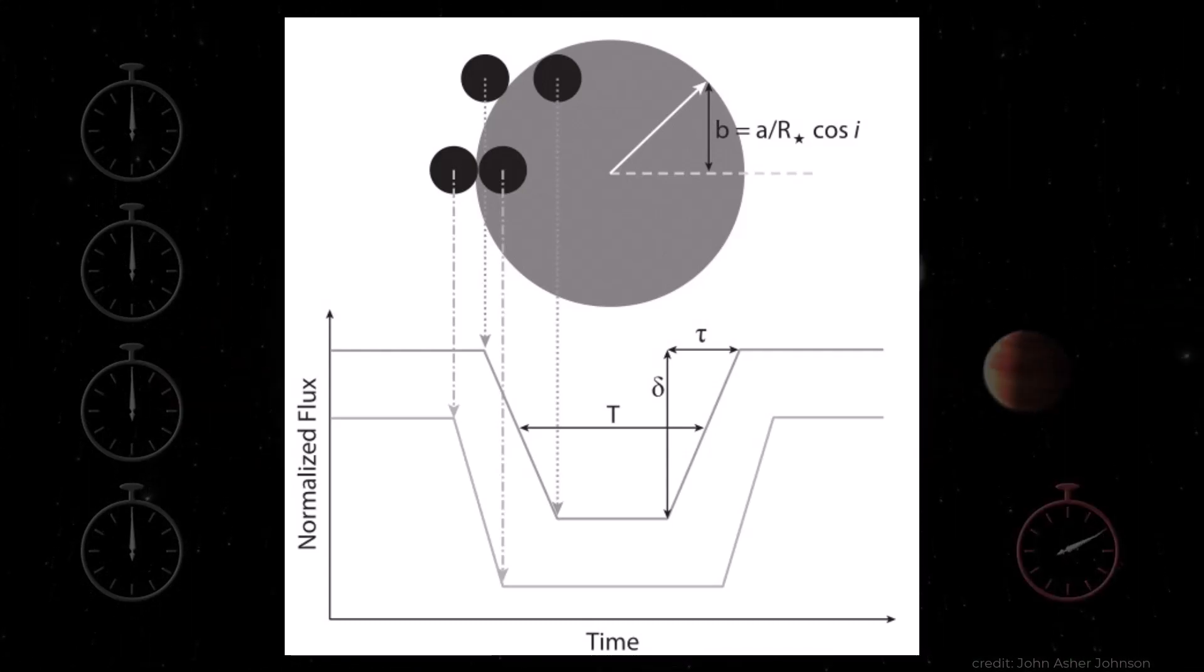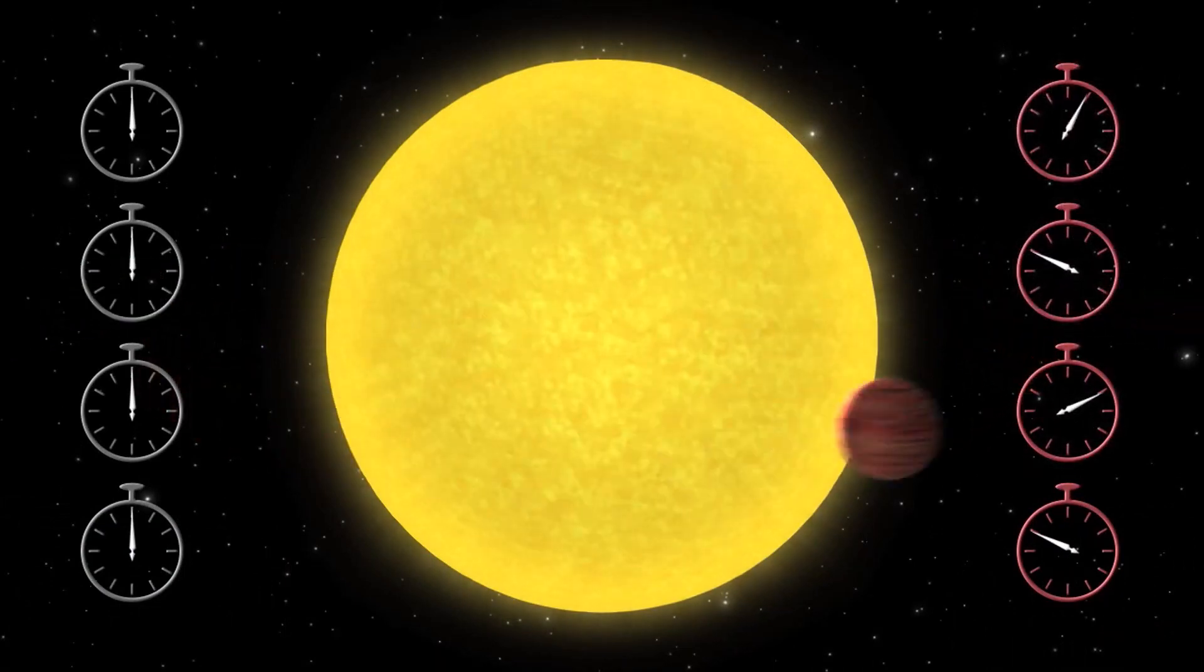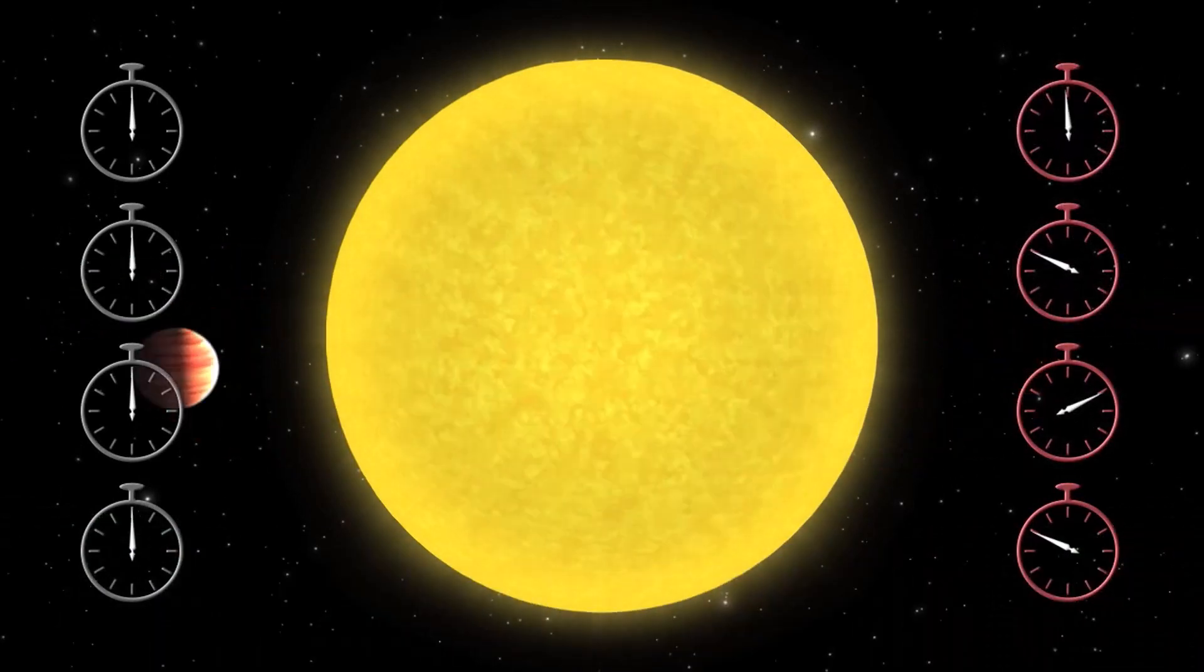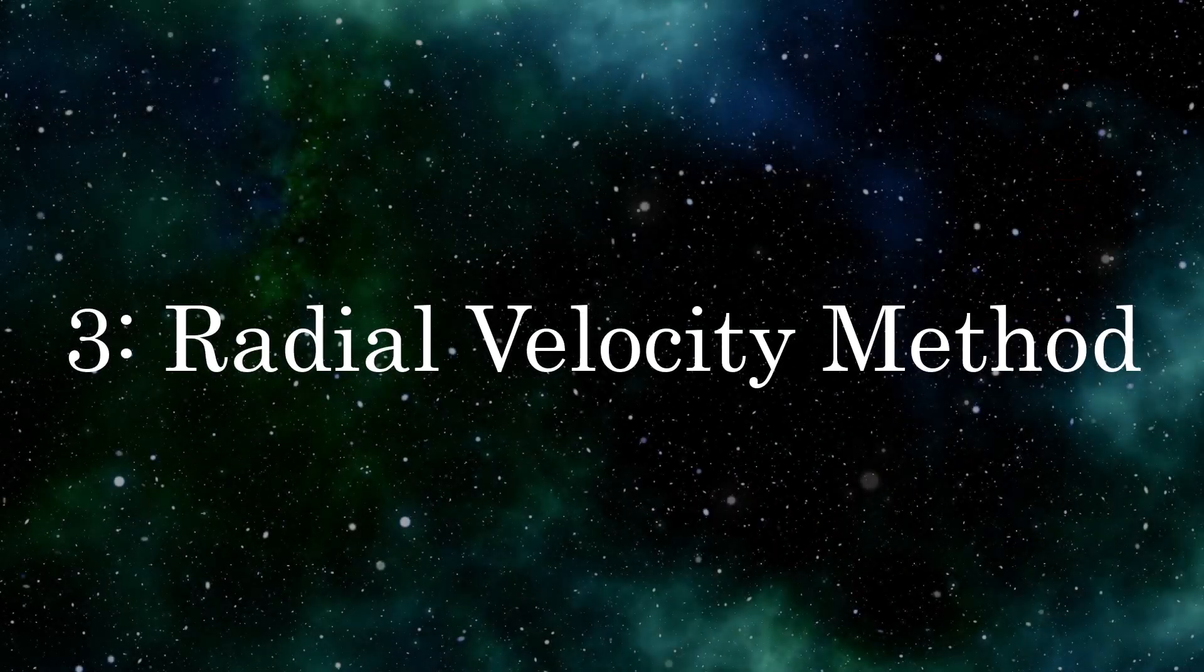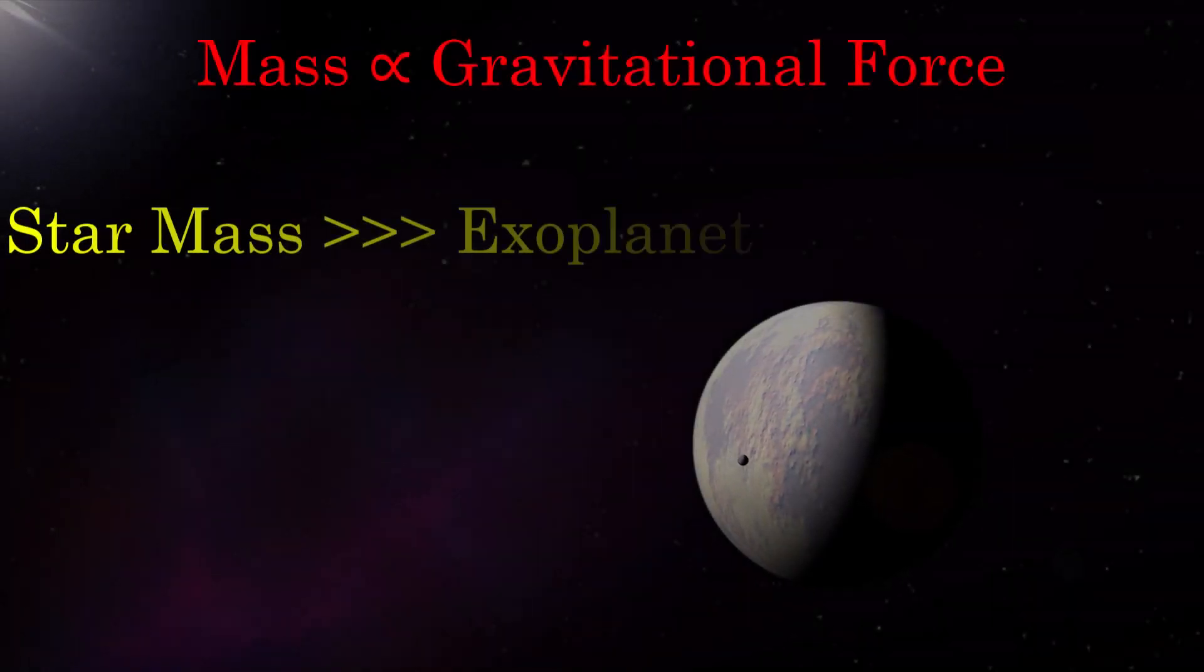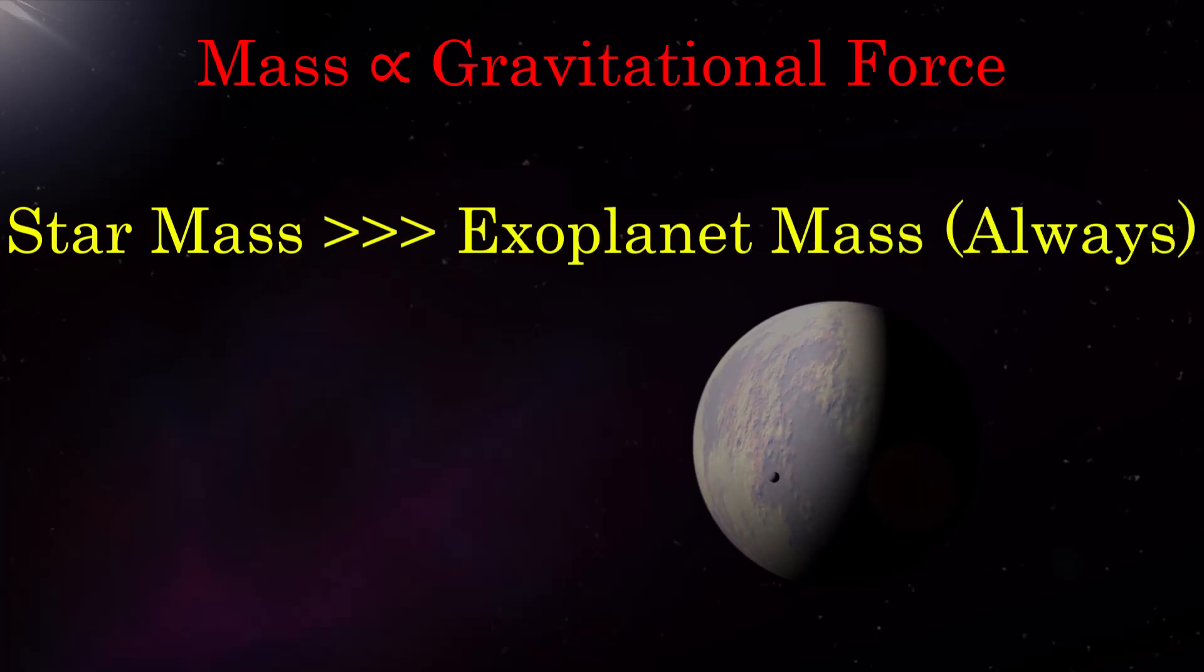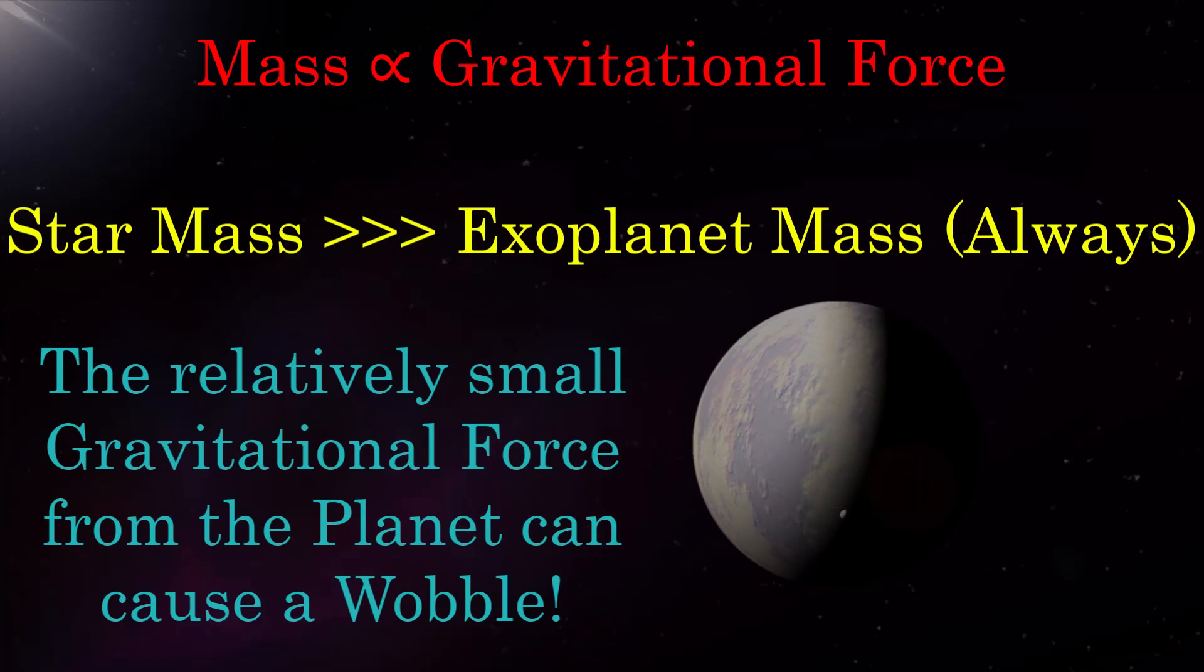And so astronomers can use this data to quantitatively work out the size of each exoplanet as well. But say you weren't satisfied knowing the radius of an exoplanet, and you instead wanted to know its mass. Then you would need to use the next method of exoplanet detection, the radial velocity method. The mass of an exoplanet is proportional to the amount of gravity it exerts, and while this is significantly smaller than the gravity of the parent star, it can still be enough to generate a wobble in the orbit of the star, as the planet completes its own orbit.